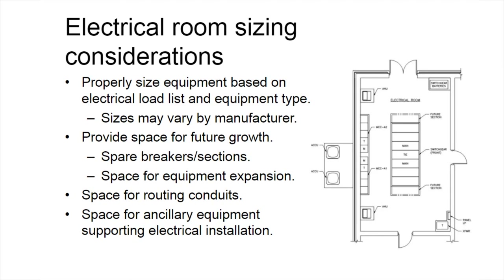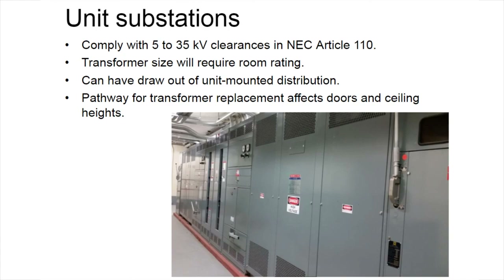Provide space for growth. Typically, equipment is laid out so that you can expand on the ends for both switchgear and MCCs. Ensure space for conduit routing — getting conduits in and out of the room — and space for ancillary equipment such as switchgear batteries, battery chargers, UPS systems, and station service transformers and panel boards supplying equipment within the room itself.